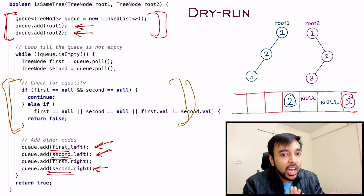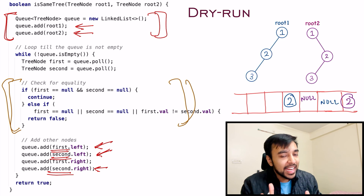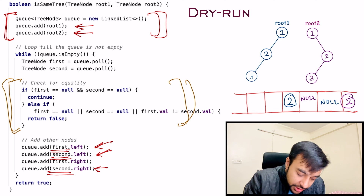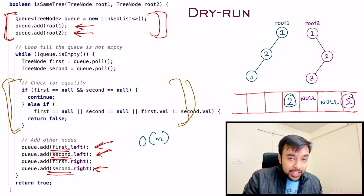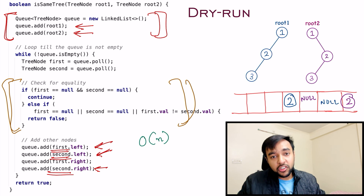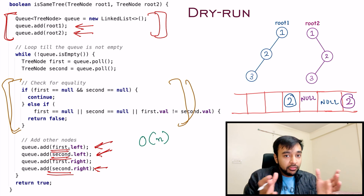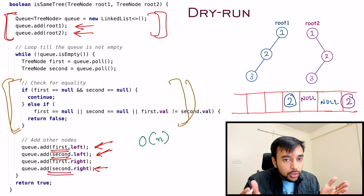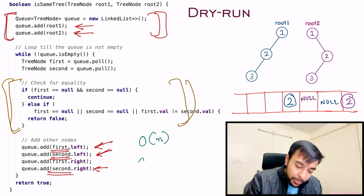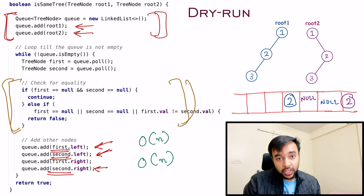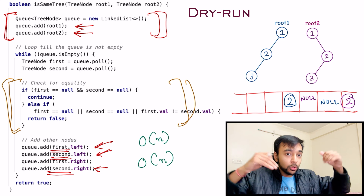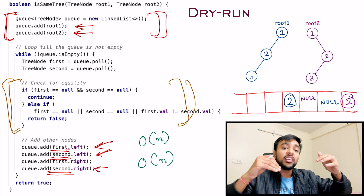If the loop passes on without any errors, we reach the end and then we return true — meaning both trees are exactly the same. The time complexity of this solution is O(n), because we need to traverse through the entire tree. If there are n nodes, we have to traverse through each of the nodes. The space complexity is also O(n), because we are taking up queue space to store all of our tree elements.